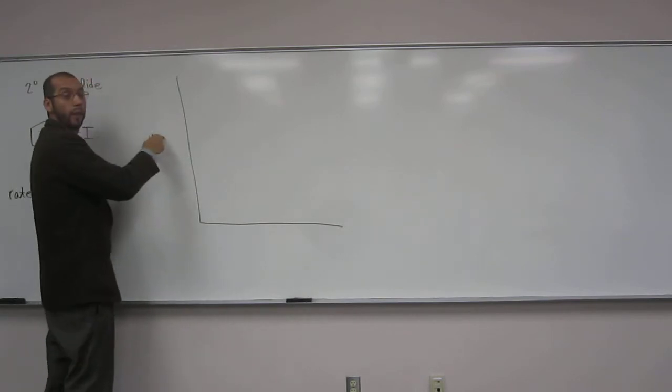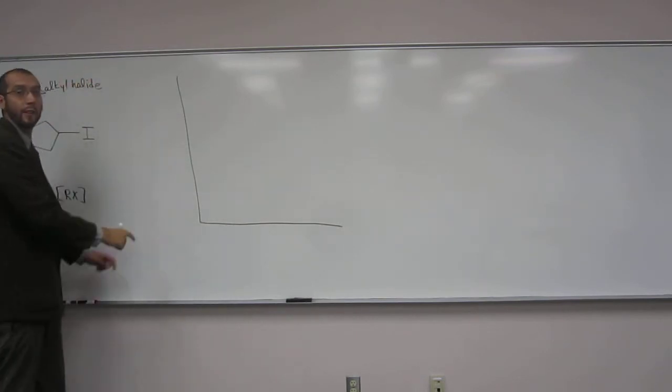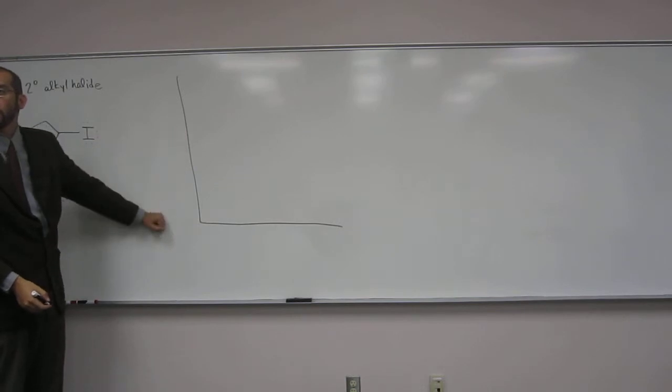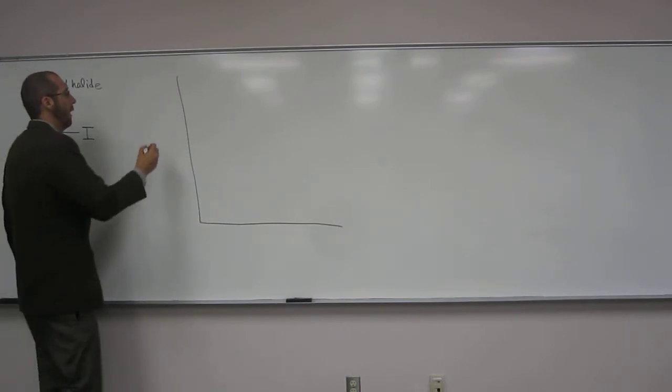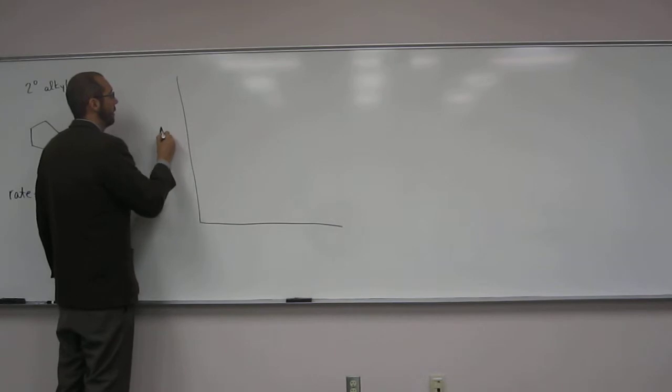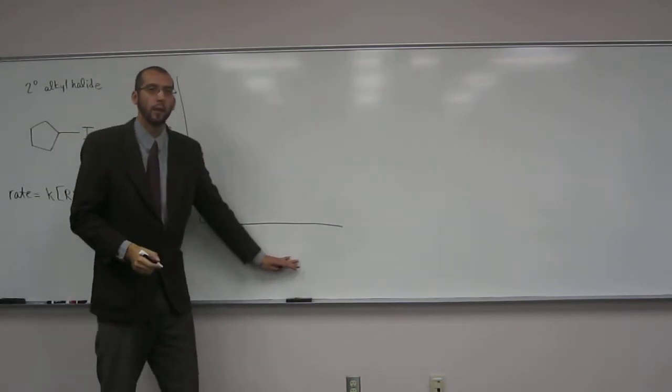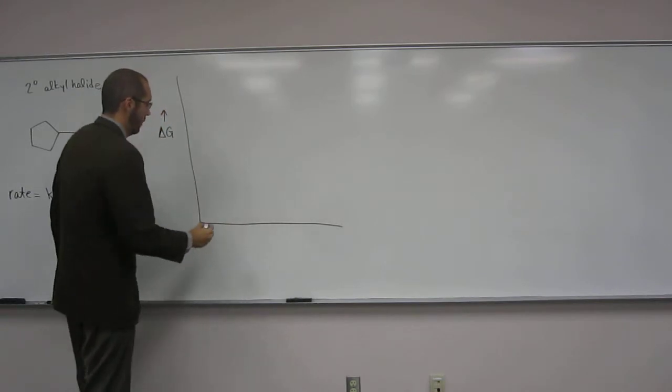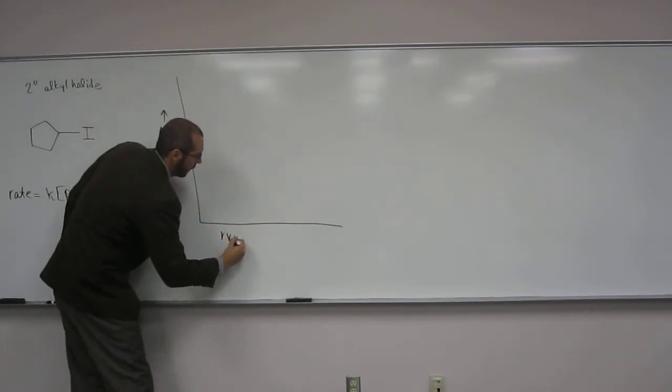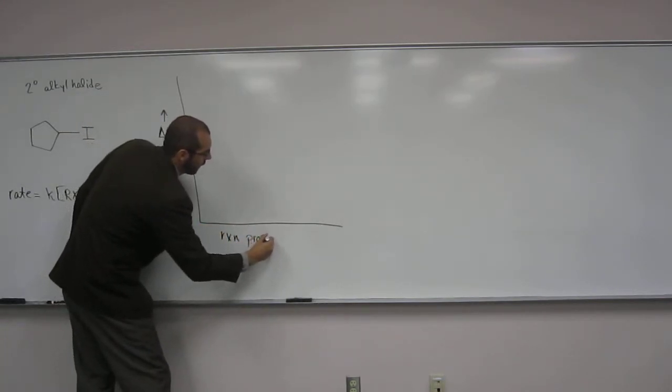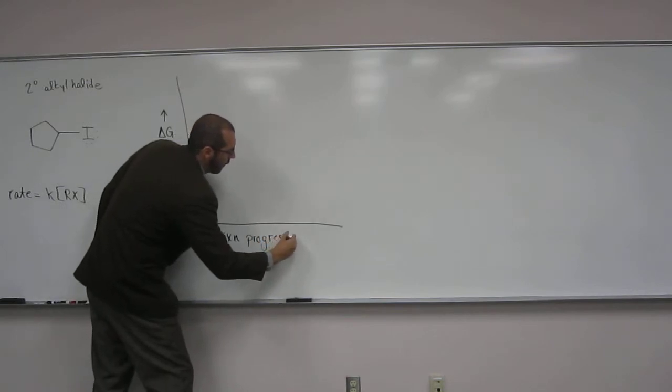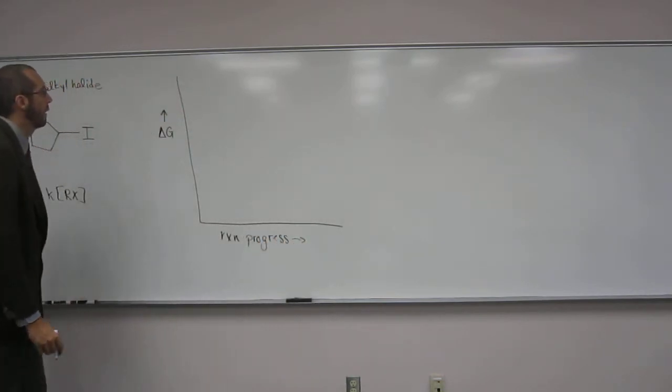So, on this axis, what's going to be...what's this axis? The energy. Often times we write it as what? Delta G. And here, what's here? Reaction progression. Reaction, yeah, reaction progress. Like that.